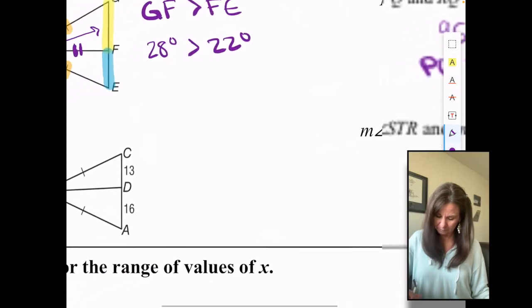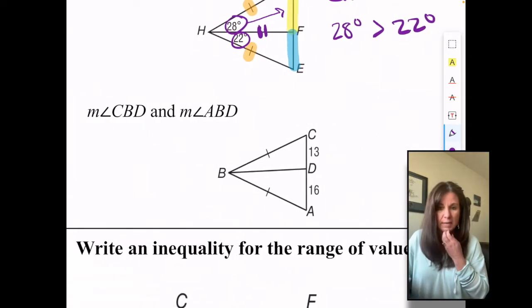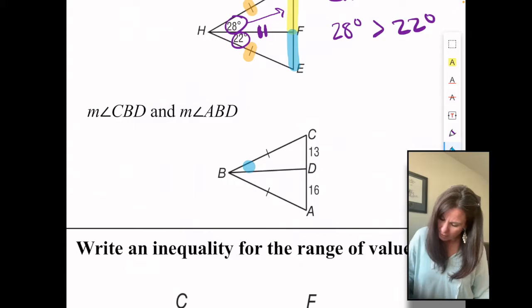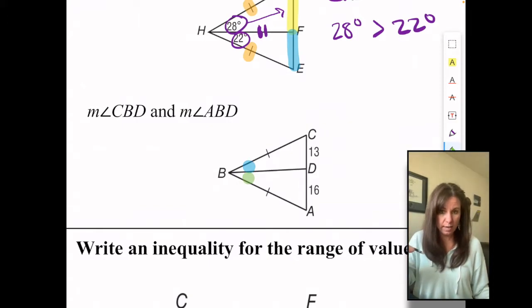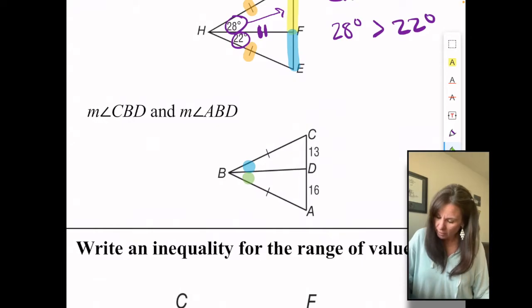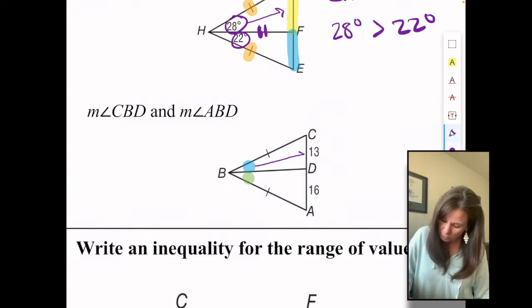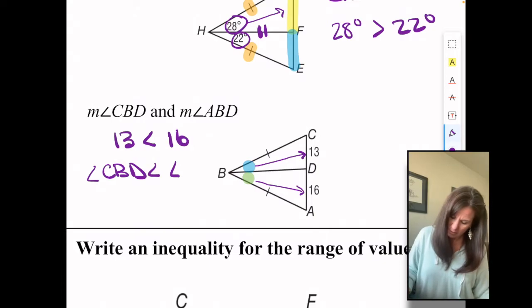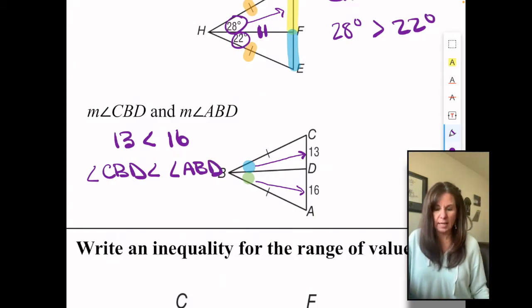Let's try the next one. Angle CBD and angle ABD. So now we're looking at angles. We're looking at CBD, this little guy in here, and ABD, this little guy here. Again, we're all set up with the corresponding congruent sides. So now we just have to look at the angles. We're going to look straight across from the angles, see which side is bigger. So we've got 13 is less than 16, which means that angle CBD is less than angle ABD.